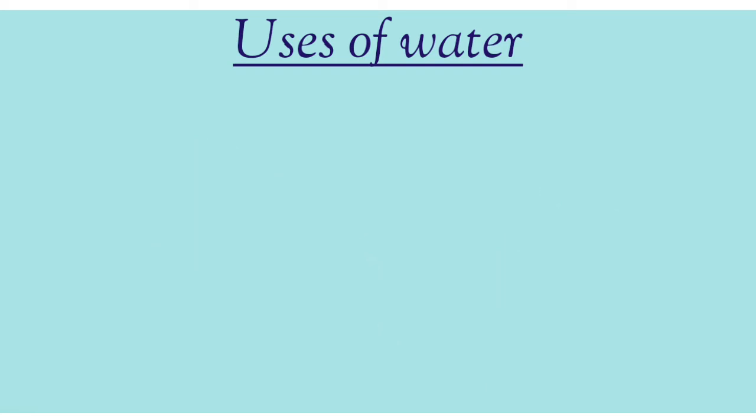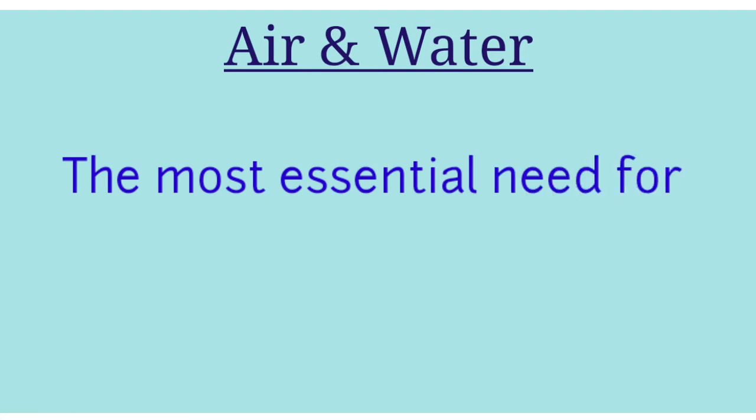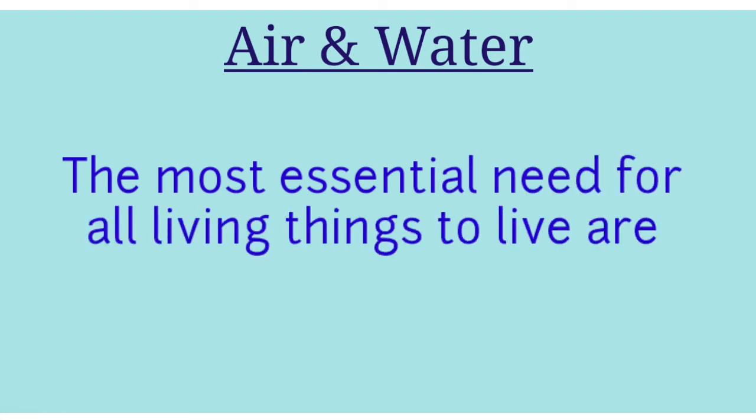So children, that's the end of our explanation. From this chapter, Air and Water, we have learned that the most essential needs for all living things to live are air and water. We should not pollute them, but we should always try to keep them clean and fresh for all living things on Earth.